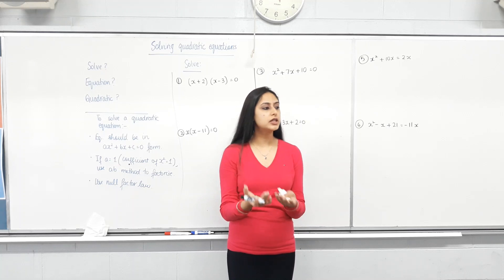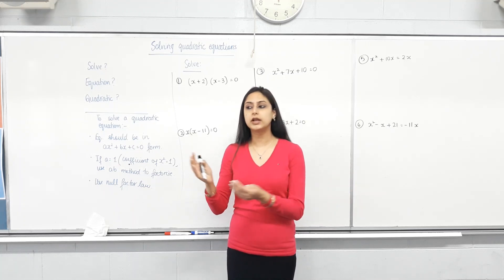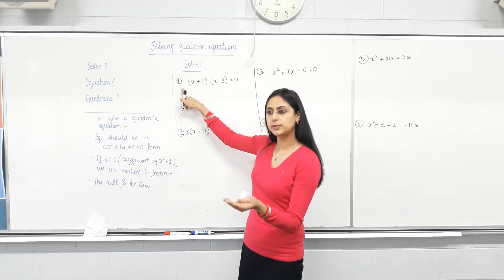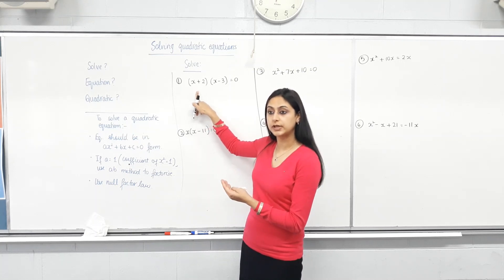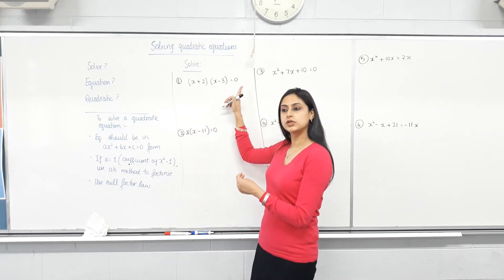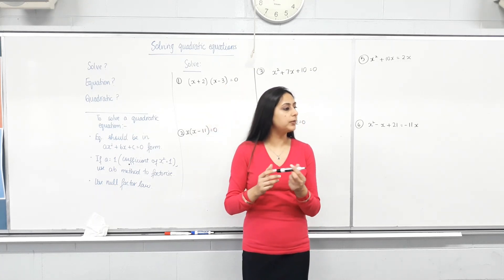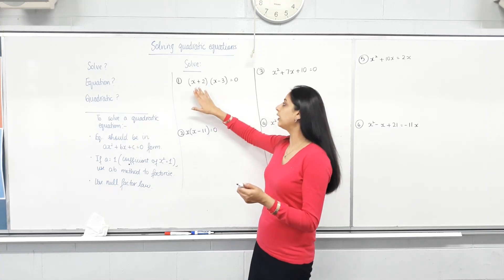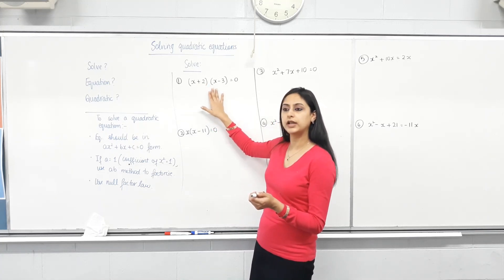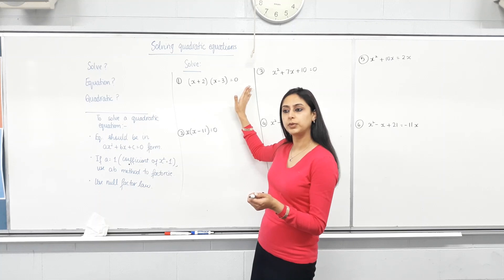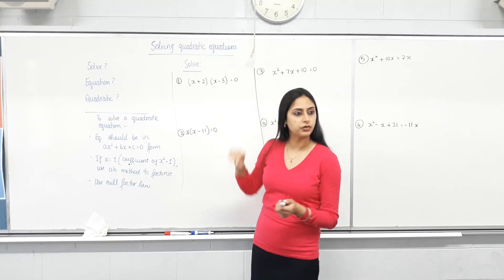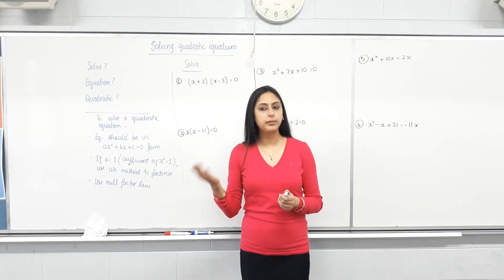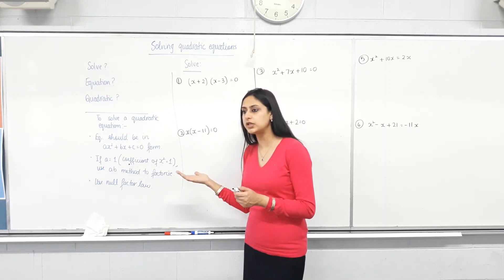So it's not just an expression like 2x plus 3. It's equal to something. So the left hand side expression is x plus 2 times x plus 3. What is it equal to? 0. So we have to solve it, means we have to find the values of x so that the left hand side equals 0.